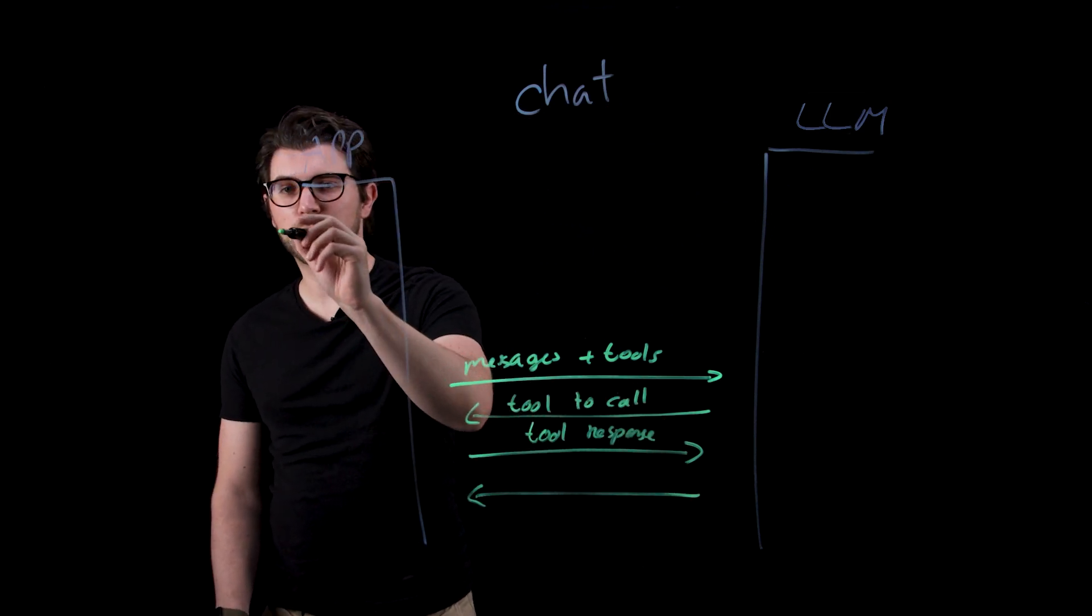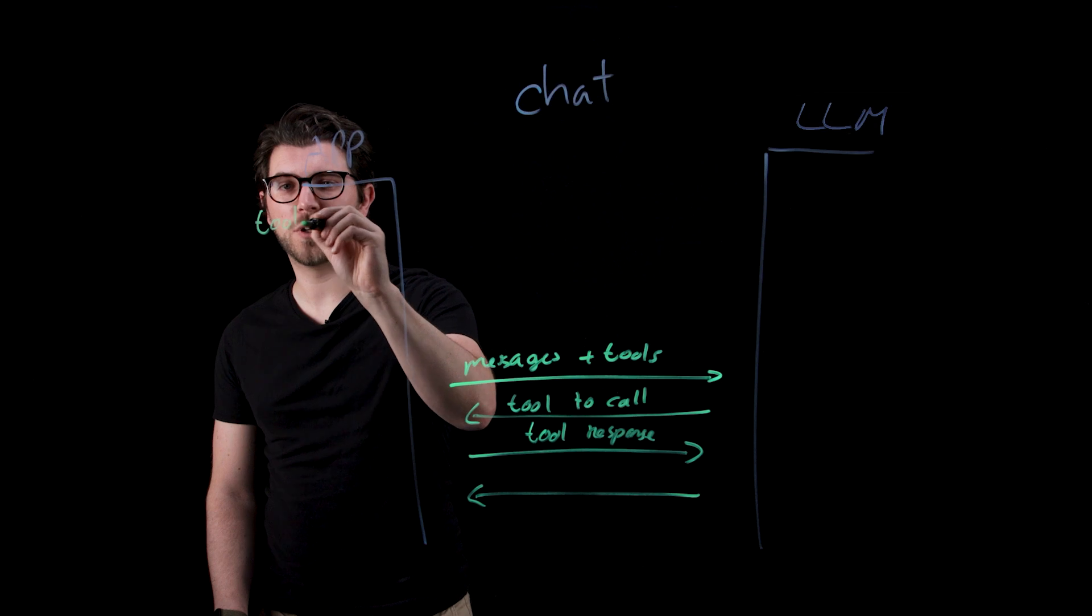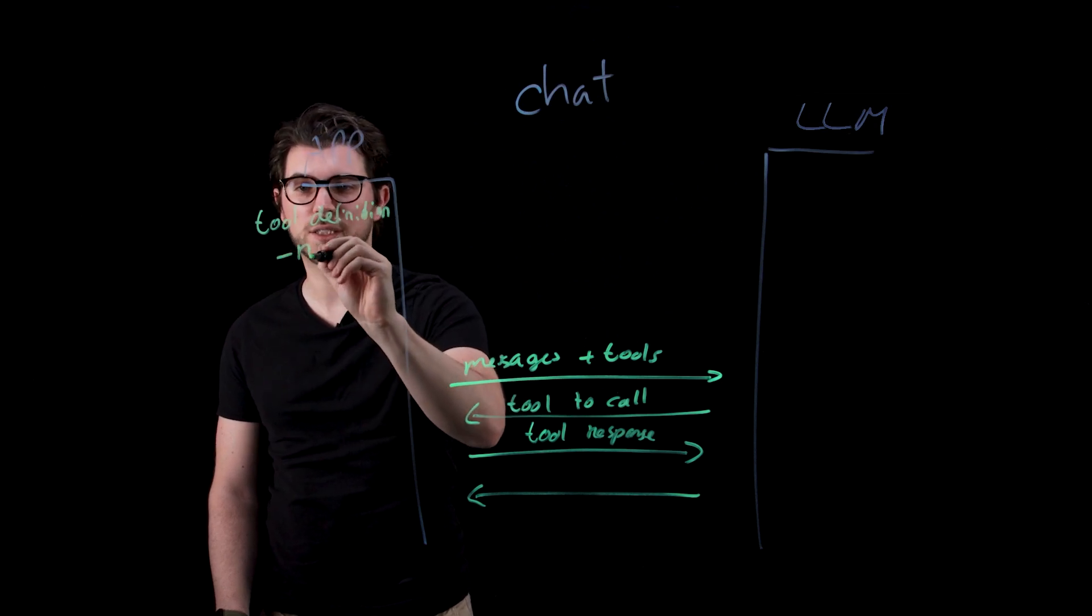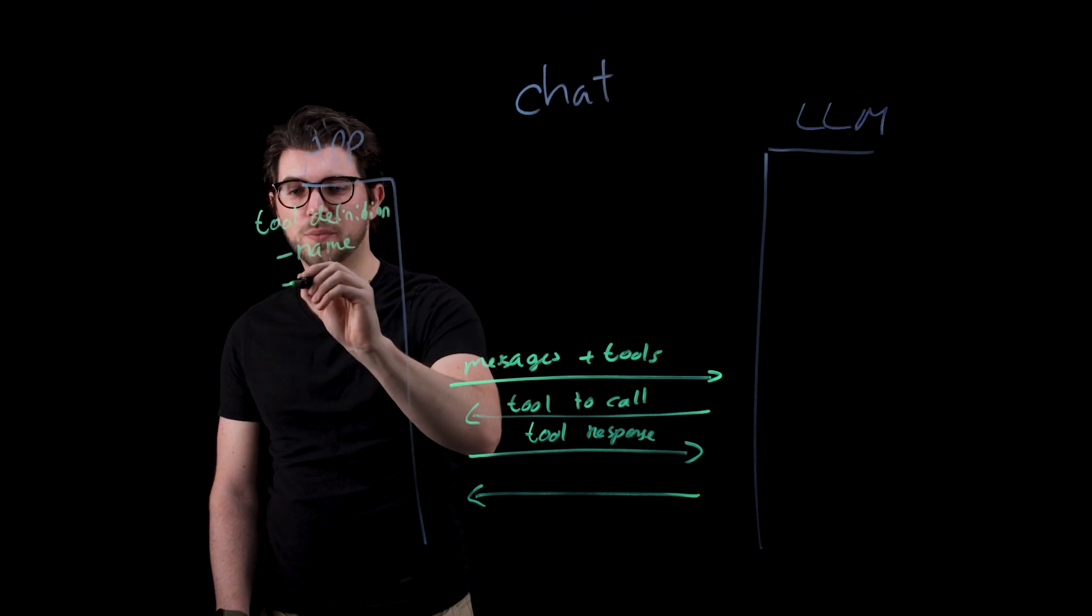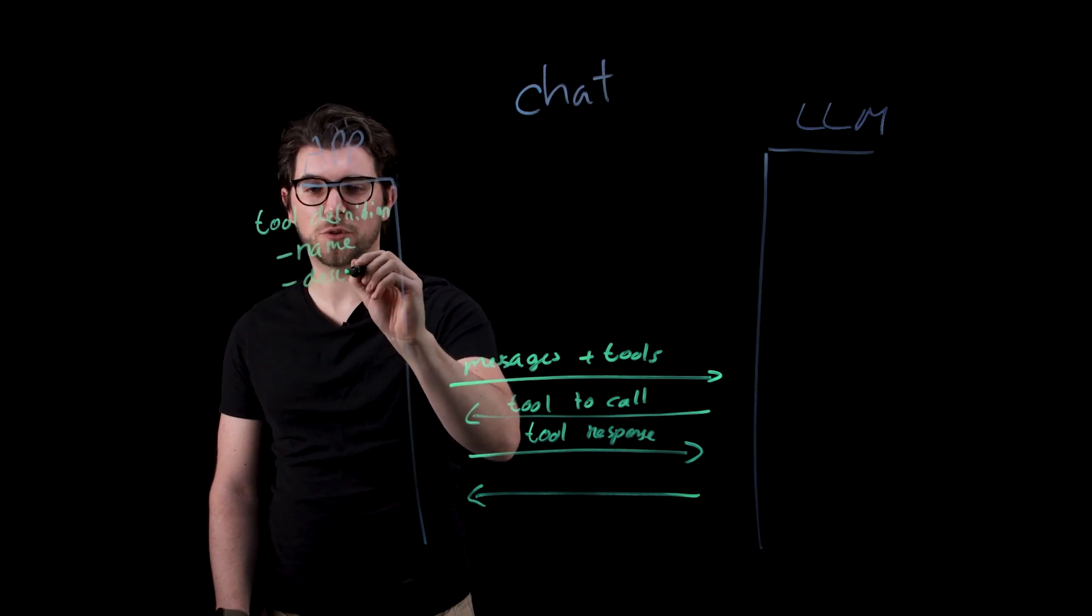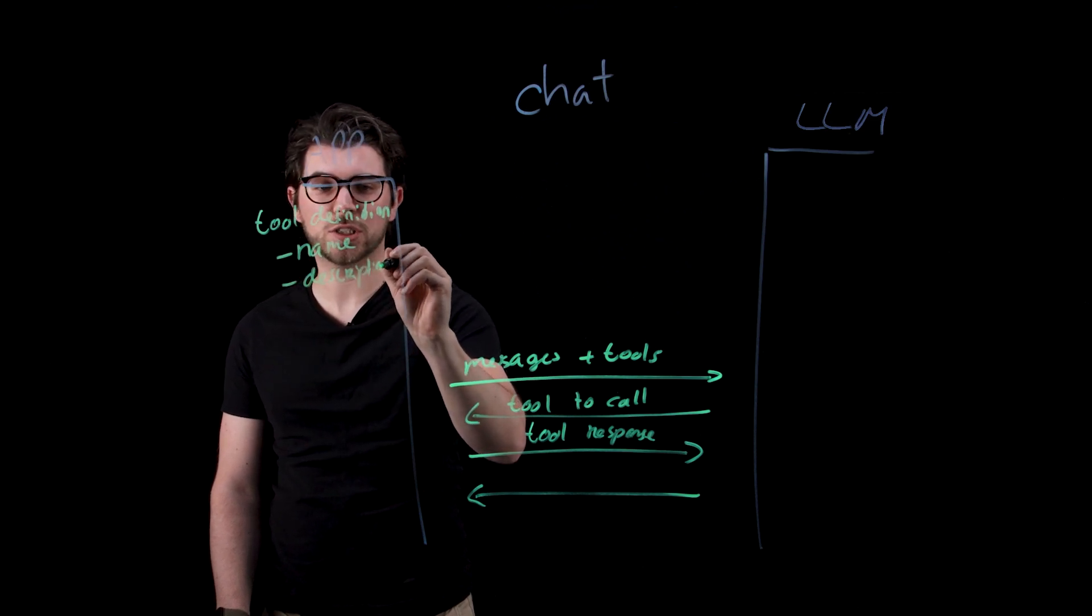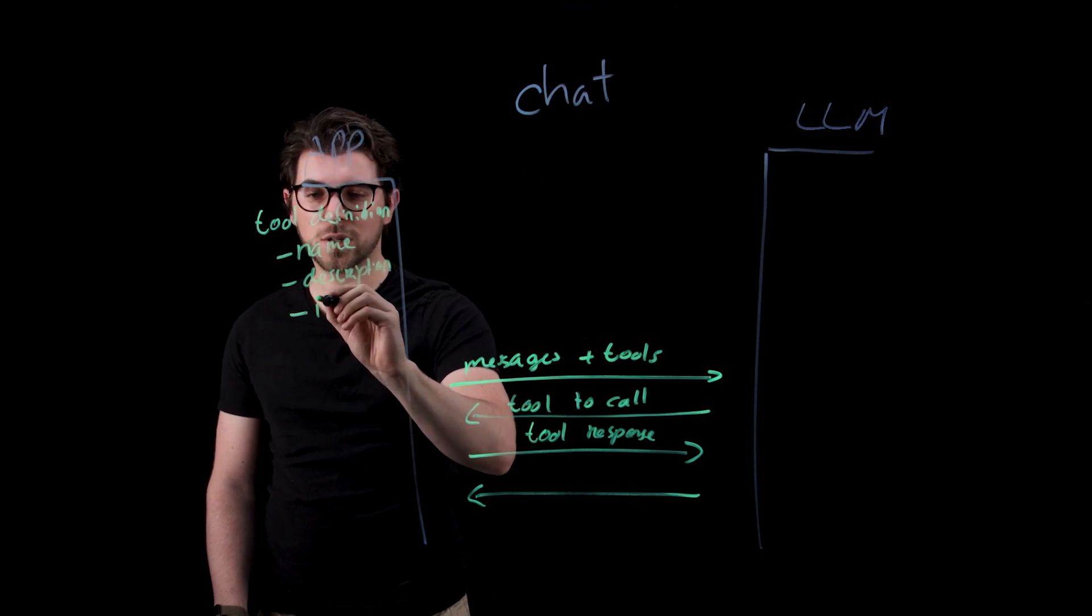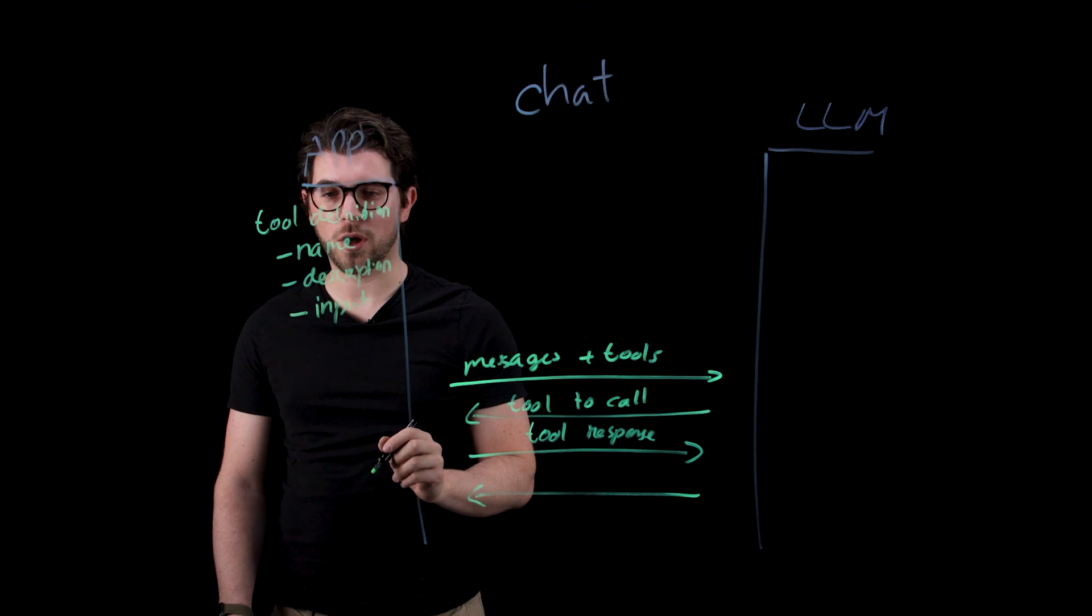In your application you're responsible for creating the tool definition. So this tool definition includes a couple of things such as the name of every tool. It also includes a description for the tool, where you can give additional information about how to use the tool or when to use it. It also includes the input parameters needed to make a tool call.